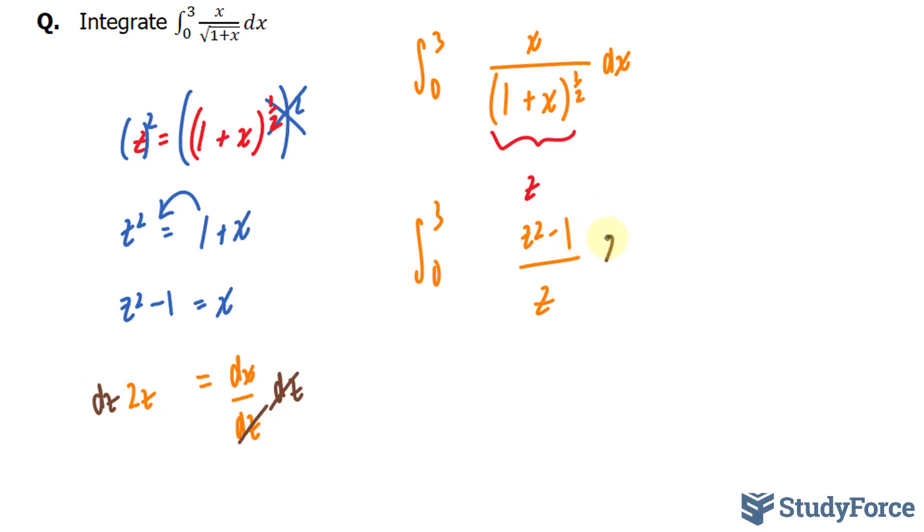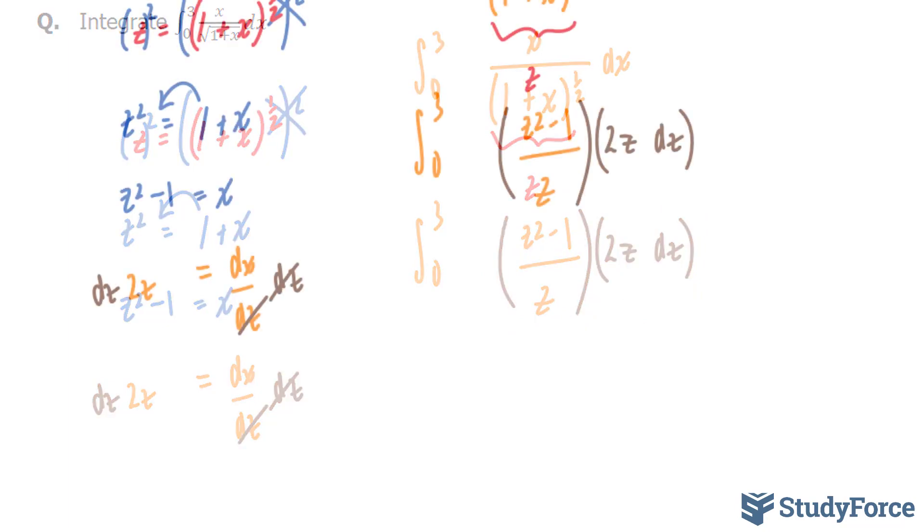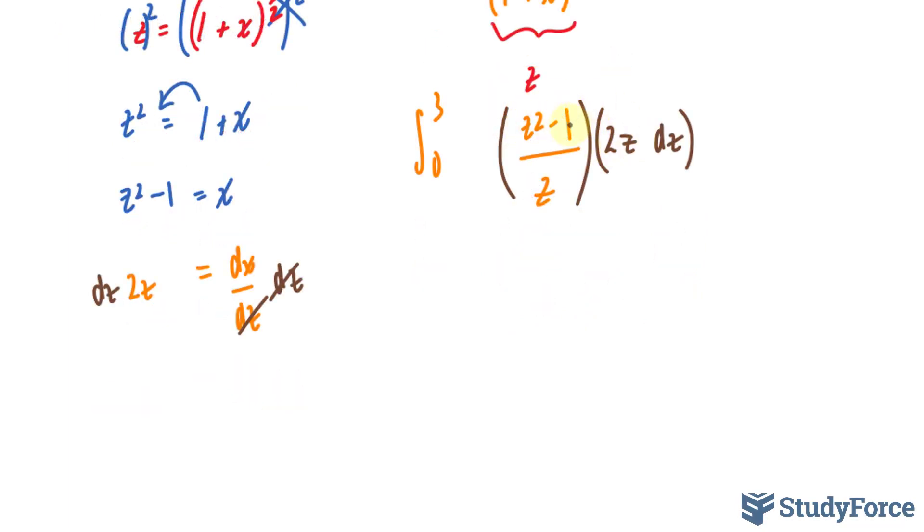So here I'll write down 2z dz. And I'll put this in brackets and this in brackets. The next thing that I'll do is multiply this 2z with these two terms at the top, giving me the integral. And the bounds will also change because now the expression is in terms of z, whereas these bounds were with respect to x. We have 2z times z to the power of 2, which is 2z to the power of 3 over z. And 2z times negative 1 is negative 2z over z dz.